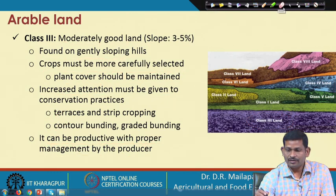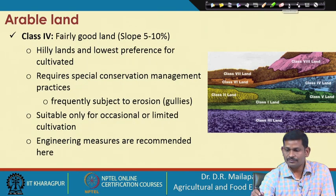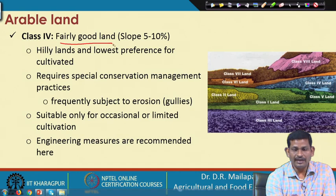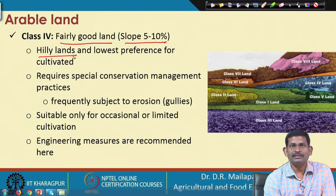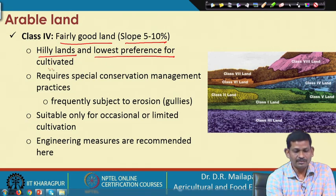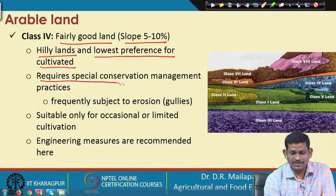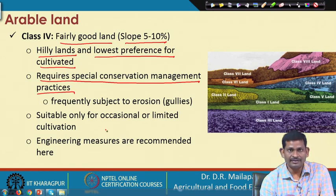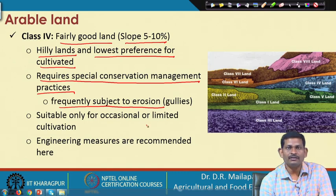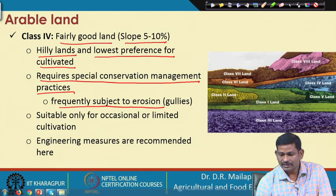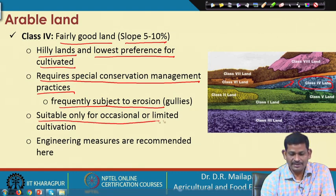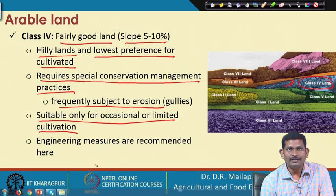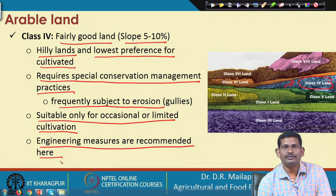Class 4 is fairly good land with a slope from 5 to 10%, mostly located on hills. It has the lowest performance for cultivation and requires special conservation management practices, as it is frequently subjected to erosion. Gullies can form easily, and it is suitable only for occasional or limited cultivation. Engineering measures are recommended to control erosion.